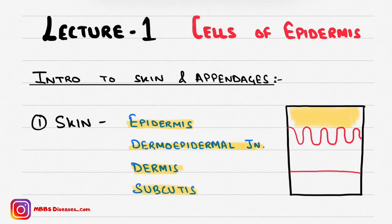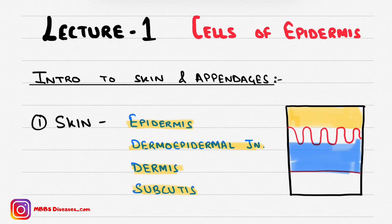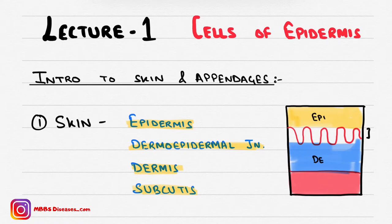This is the epidermis part, this is the dermis part, and the section between them is the dermo-epidermal junction, which connects the epidermis to the dermis. The last part is the subcutis. So the topmost part is epidermis, then dermis, then subcutis, and this whole section is the dermo-epidermal junction.